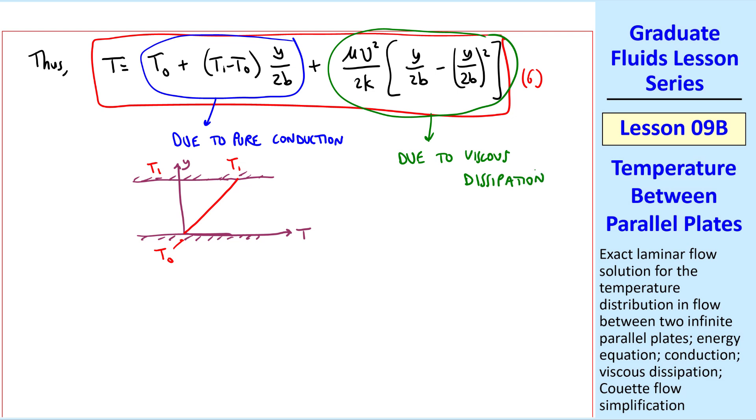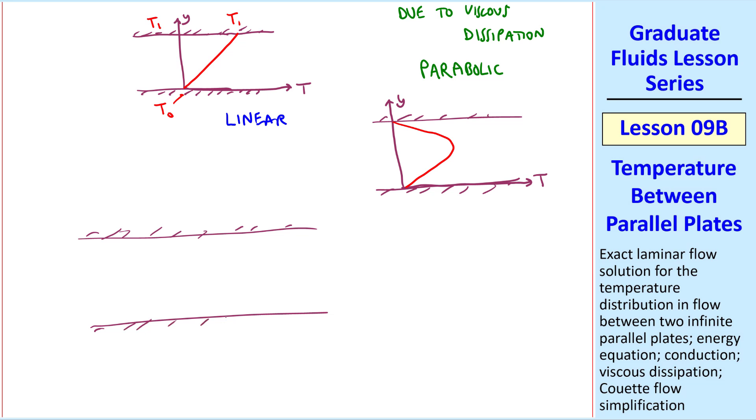This part of the equation is due to viscous dissipation. Viscous stresses in the fluid cause the fluid to heat up, while the pure conduction part is linear. We can see by the y squared term that this viscous dissipation part is parabolic, which will look something like this. Adding these two components together, we get the final temperature distribution, which will look something like this.